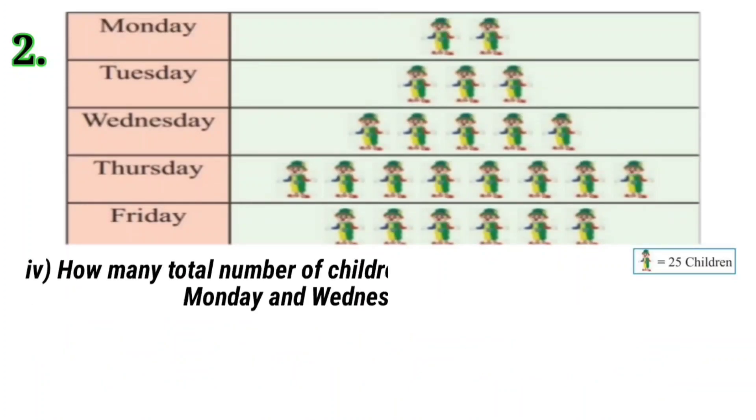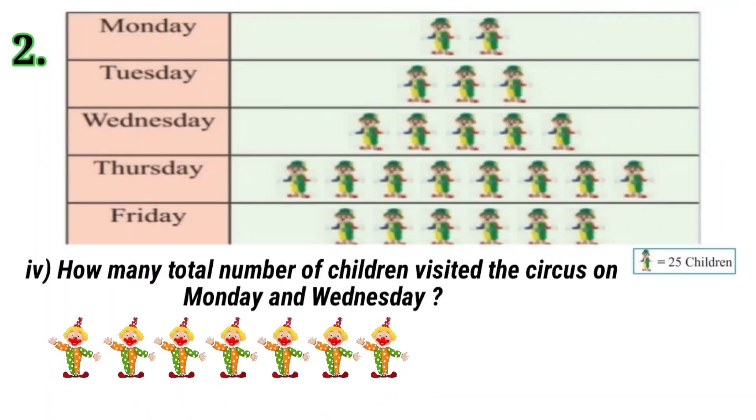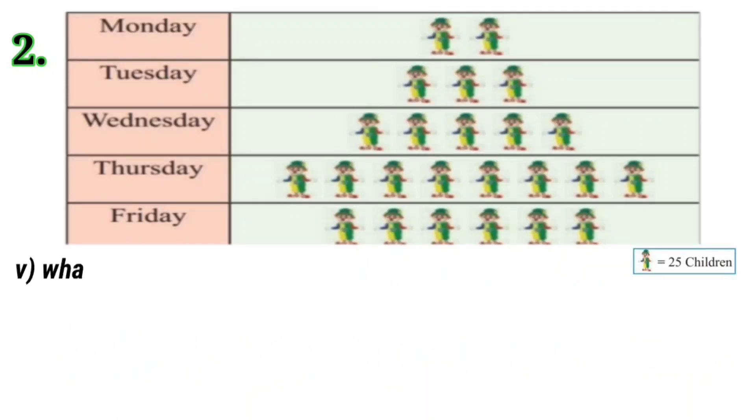Question 4 is, how many total number of children visited the circus on Monday and Wednesday? Total symbols used for Monday and Wednesday are 7. 7 into 25 is 175. Therefore, total of 175 children visited circus on these 2 days.